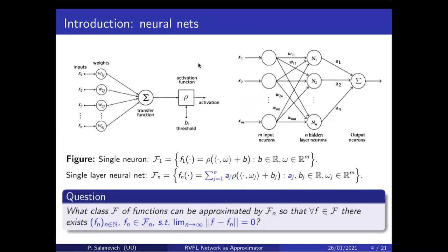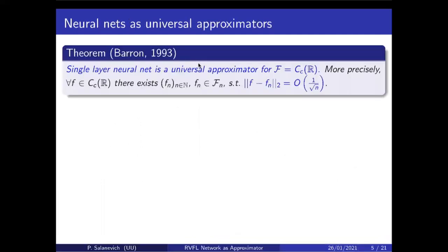The question we're going to be answering today is: what class of functions can be approximated with this network? We want to take some set of functions and ensure that for any function from the set, the limit of the approximation error goes to zero as we take more and more neurons in the hidden layer. This question was already answered a pretty long time ago: Barron in 1993 showed that if we take any continuous function with compact support, there exists a sequence of single-layer networks such that the approximation error decays to zero at the rate of 1/√n.